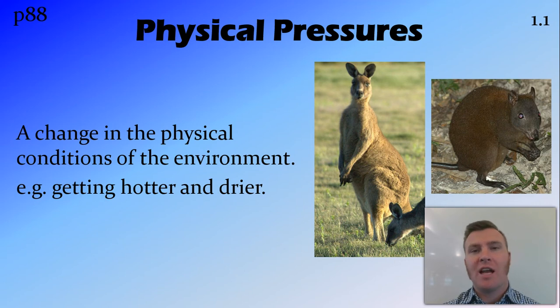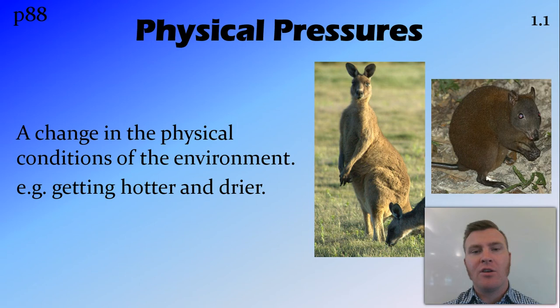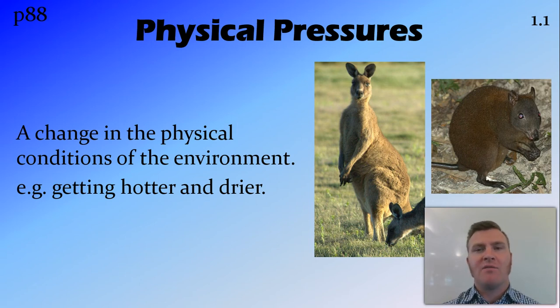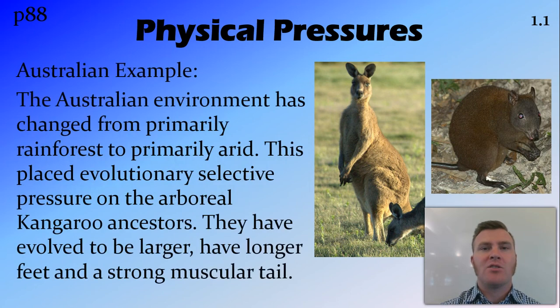So temperature getting hotter, rainfall getting drier, humidity decreasing — all these things are a change in physical pressures, which brings us into our Australian example.